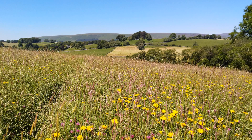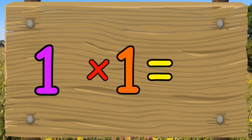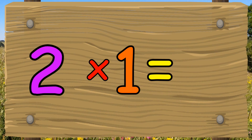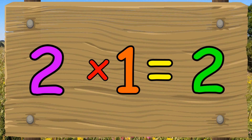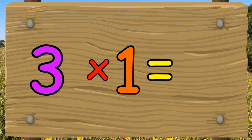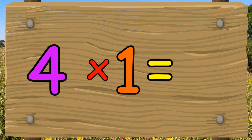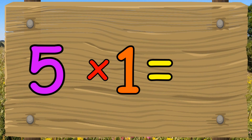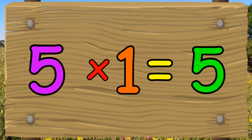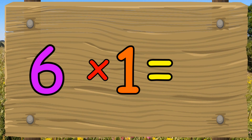Let's learn the 1 times table. 1 times 1 equals 1. 2 times 1 equals 2. 3 times 1 equals 3. 4 times 1 equals 4. 5 times 1 equals 5. 6 times 1 equals 6.